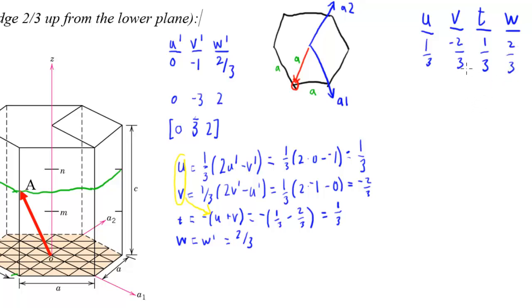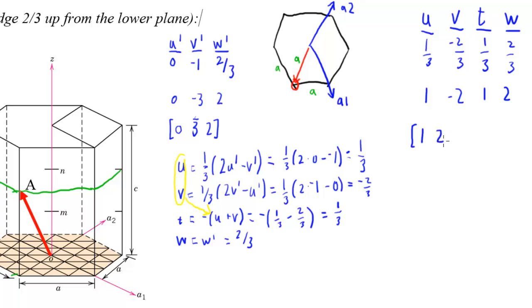Our next step is to multiply through by the common denominator, obviously 3. So this becomes 1, negative 2, 1, 2. Then, to put it in proper notation, we end up with [1, 2̄, 1, 2].